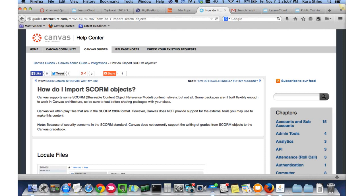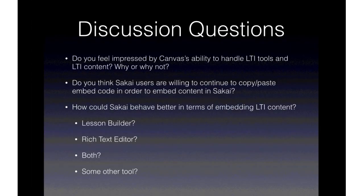I'm going to toggle back to the PowerPoint and open things up for discussion. I just wanted to tell everybody that you can play SCORM in Sakai without a SCORM player. Now that I've finished my — I guess it was kind of a rant about Canvas and Sakai's rich text editor — I'd like to see if anyone wants to discuss Canvas or Sakai and how Sakai could behave better with these content embedding tools.